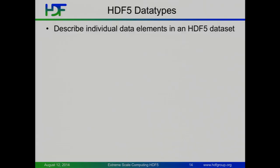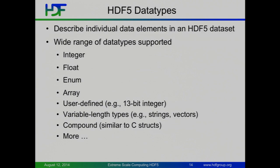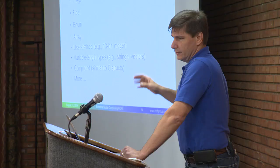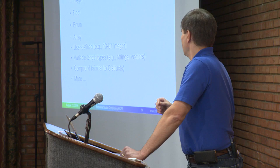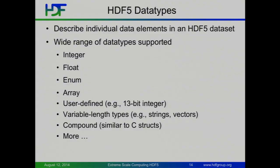The other half of a dataset is data types. These describe the individual dataset elements. We support all kinds of different data types — you can put ints, floats, enums, lots of stuff. Arrays, if you want to store matrices of things — each element can be a Hermitian matrix or some other matrix. You can define your own 13-bit integers if you have a satellite up in space — sometimes sensors are geared that way. Strings, vectors, structs — you can nest these things. You can have really complicated compound structures. Just give some thought to that, because it may be very confusing for your end users eventually.